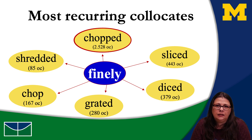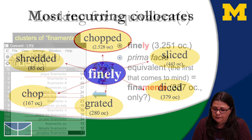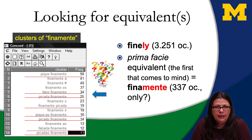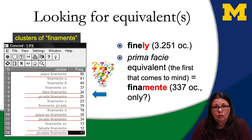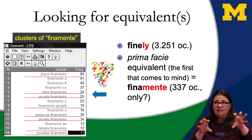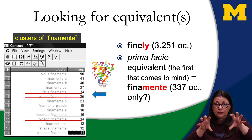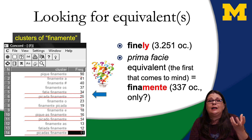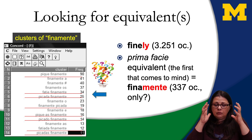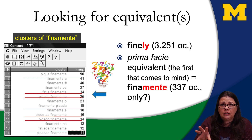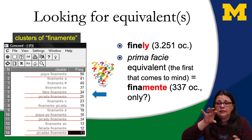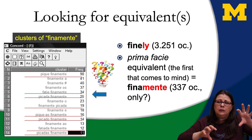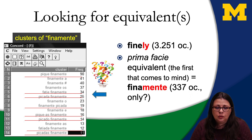How would I say 'finely chopped' in Portuguese? Would it be 'finamente picado'? When I look at the frequency of 'finamente' in this corpus — which is theoretically very similar to my corpus in English — it only occurs 337 times, which is very strange. How can 'finely' occur 3,000 times, while 'finamente,' the first equivalent that comes to mind, only occurs 300 times in the Portuguese corpus that has the same kind of texts and more or less the same number of texts? It's very strange.